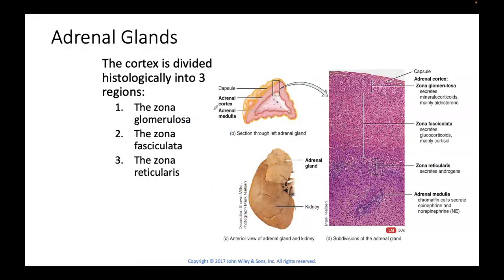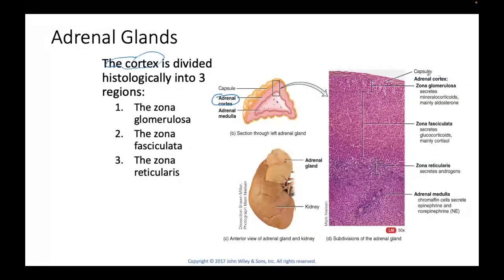Let's take a look at the adrenal cortex histologically. There are three zones: the zona glomerulosa, the zona fasciculata, and the zona reticularis. The zona glomerulosa is the outermost, and we move in deeper and deeper. Looking at the adrenal cortex, we can see the three layers. The zona glomerulosa is the more superficial part and is going to secrete your mineralocorticoids.